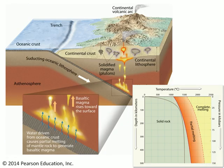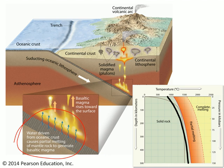Divergent boundaries aren't the only place we see magma being produced. We also get it at subduction zones, at convergent boundaries. Here the cause is a little bit different — it's actually due to water that's being driven from the oceanic crust, and that water lowers the melting temperature of the overlying mantle. Basically what that does is shift over the line where we get partial melting, so that line is now below the geothermal gradient, and we're going to get partial melting generated in that area.